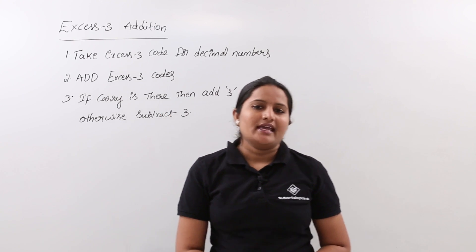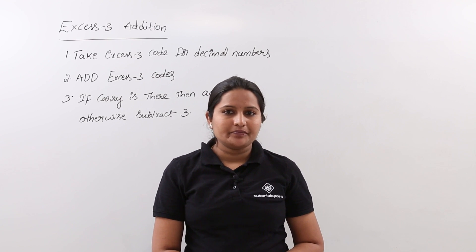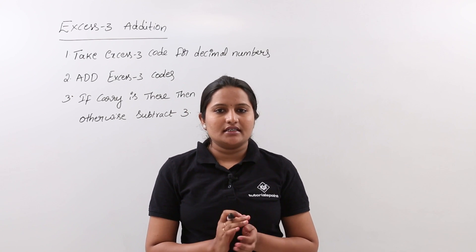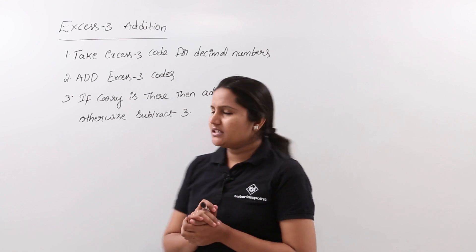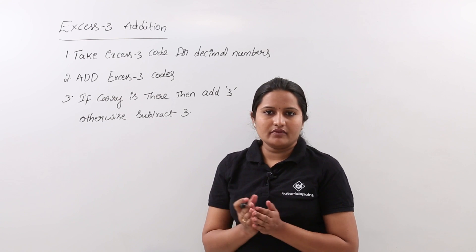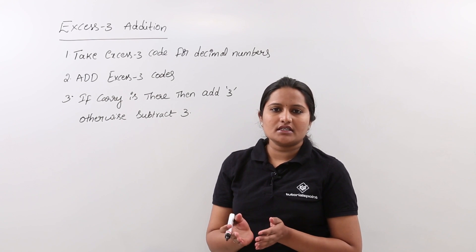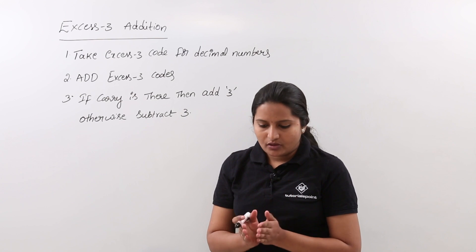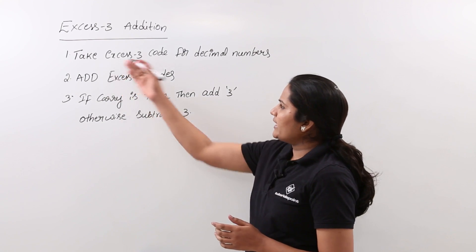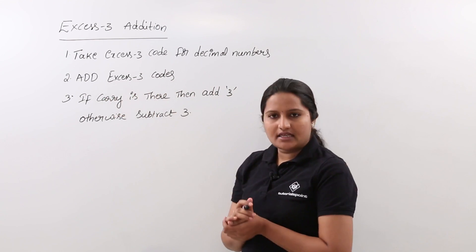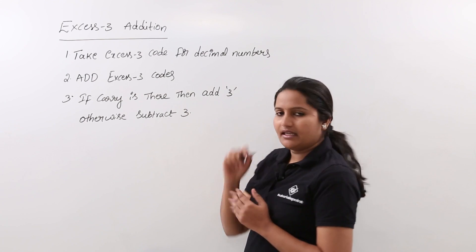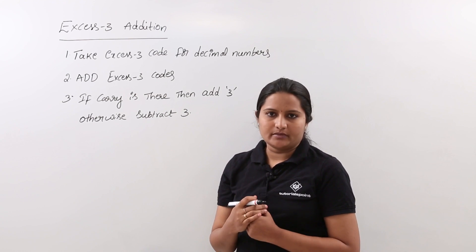In this class we are going to discuss XS3 addition under XS3 arithmetic. If you have any two XS3 numbers and want to find their sum, you need to follow some steps. First, take the XS3 code for both decimal numbers. Then add those XS3 codes. If a carry is generated in the addition result, add 3 for that result; otherwise, subtract 3.